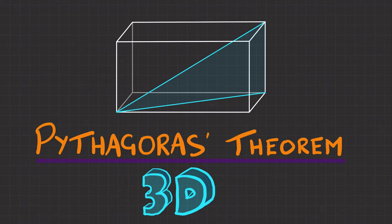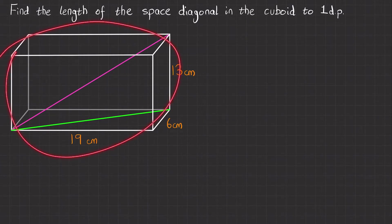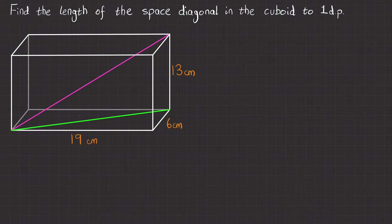Here we go dealing with Pythagoras's theorem in 3D space. Let's have a look at our first question in depth. We've got to find the length of the space diagonal in the cuboid to one decimal place. We've got this cuboid, and we've got the space diagonal, which is the diagonal across the space within the shape — so it's this pink line here.